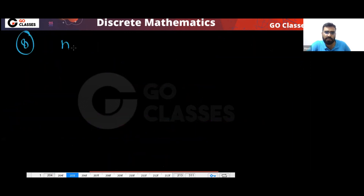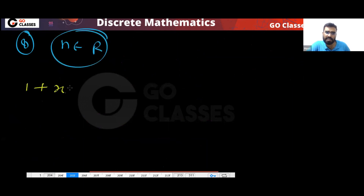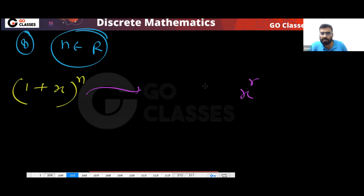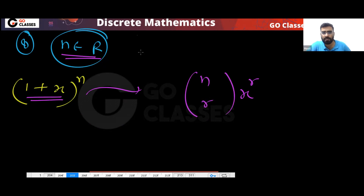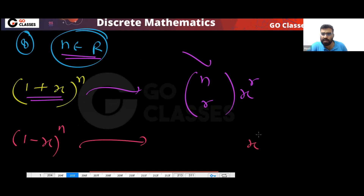The eighth point: if n is a real number, then (1+x)^n is allowed. The coefficient of x^r in (1+x)^n is nCr. For (1−x)^n, the coefficient of x^r is (−1)^r · nCr, because you have (−x) in place of x.